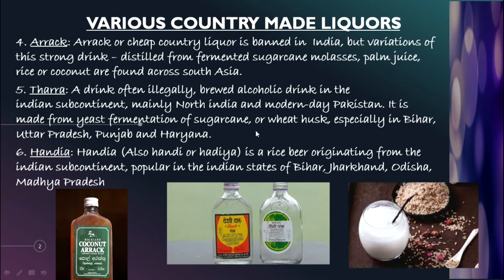Thara, shown on screen, is also known as Desi Daru. Then comes Handiya, also known as Handi. This drink is made from rice, prepared by fermenting boiled rice mixed with certain herbs. It is commonly seen in Bihar, Jharkhand, Odisha, Madhya Pradesh, and Chhattisgarh.